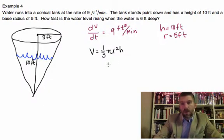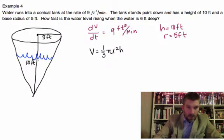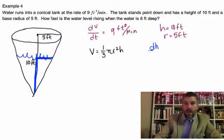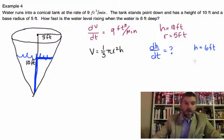All right. So, how fast is the water level rising when the water is 6 feet deep? So, I'm going to go and change now to blue. So, we are looking now for this triangle right here. All right. The question for us is, dh/dt, what is dh/dt when h is equal to 6 feet?